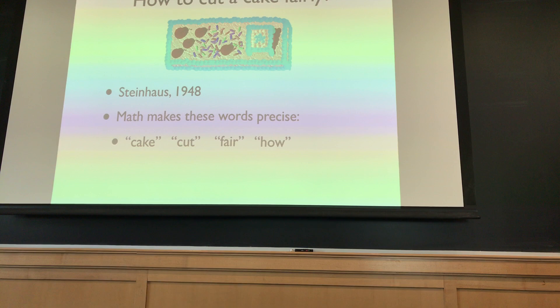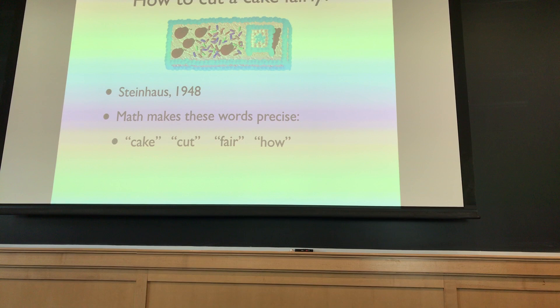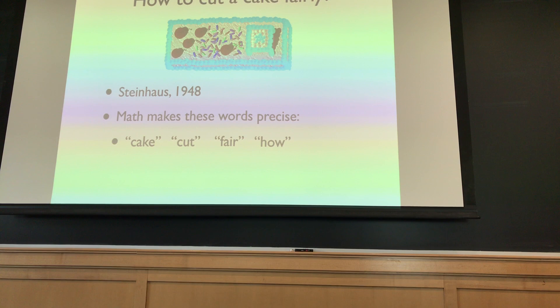That's part of a larger set of questions known as fair division: how do you divide some objects fairly among several people? It's an age-old problem studied since antiquity, and it's probably first mentioned in the academic literature by Steinhaus — a mathematician — in an Econometrica paper, one of the top journals of economics. The question: how do you divide a cake fairly?